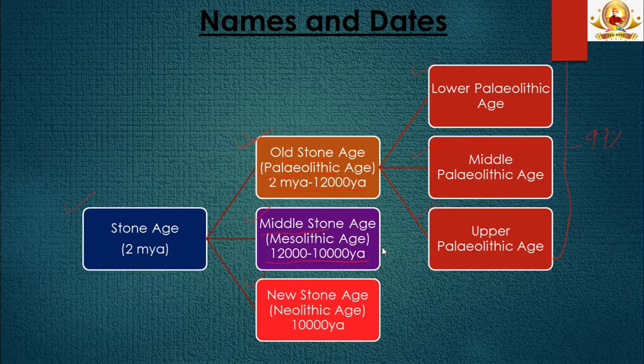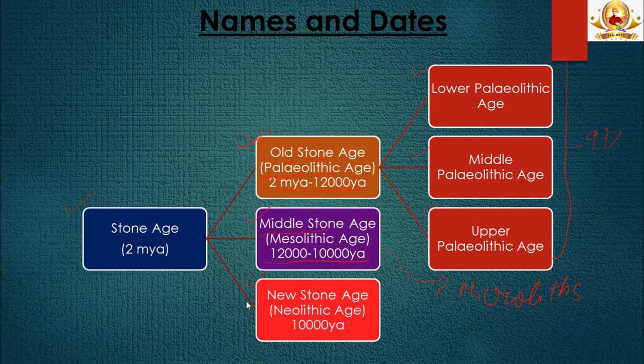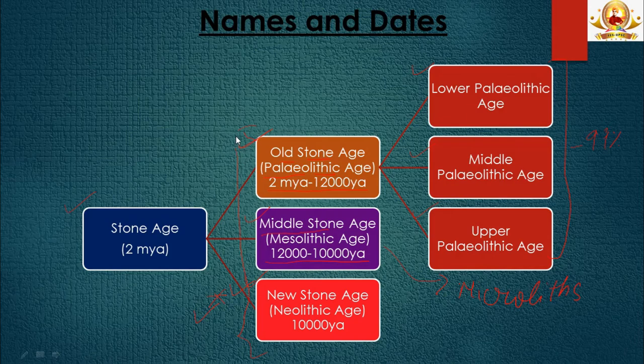Stone tools found during the Mesolithic period are generally tiny and are called microliths. Microliths were probably stuck onto handles of bone or wood to make tools such as saws and sickles. Older varieties of tools continued to be in use alongside them. The next stage, from about 10,000 years ago, is the Neolithic or New Stone age, when agriculture began. Neolithic tools were polished, giving sharp edges. All three stone ages had different types of tools, though earlier tools continued in use in later periods.